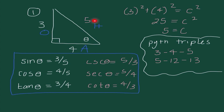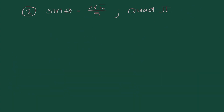Any time we just have a triangle drawn like this, we use the Pythagorean theorem or a shortcut to find the missing side, then find all six ratios. Number two is more similar to the type of problem we're going to see — it gives us a trig function and tells us what quadrant to draw this in. The very first thing we're going to do is sketch out a graph, starting at the origin and drawing a line into quadrant two, then drawing a line from where that ends down to the x-axis.